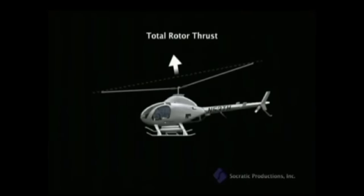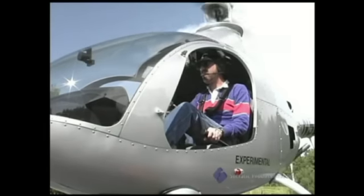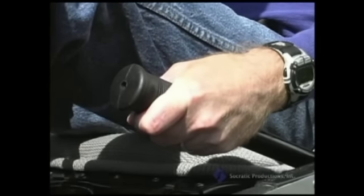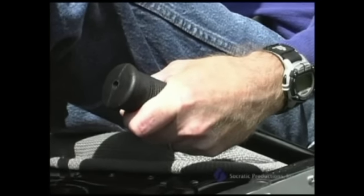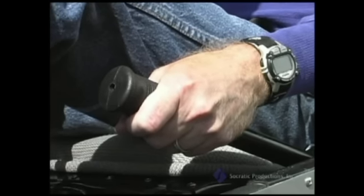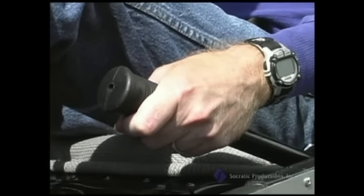Before we go on to how a helicopter hovers and moves through the air, there is something else we must first cover. To accelerate the rotor, the rotor RPM is increased by turning the throttle located on the collective stick. A helicopter is designed to fly with the speed of the blades — the rotor RPM — constant with little variation. So we turn the throttle to increase the power, which in turn increases the RPM of the blades.